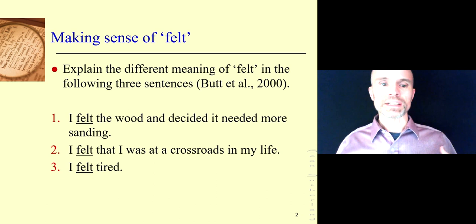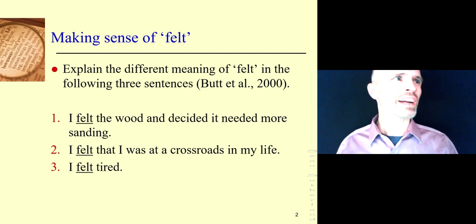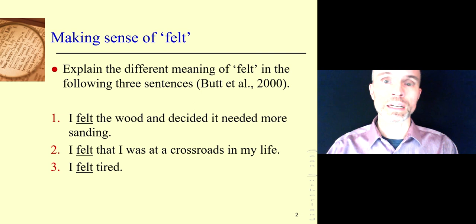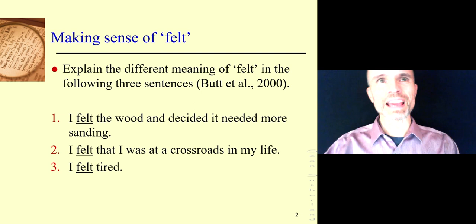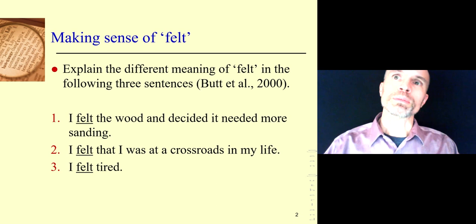Number one is actively doing something. Number two is a mental doing — doing something in your head, or an emotional doing. Number three, feeling tired, you're not really doing anything — you're describing an experience where nothing's actually happening. That's a good example of how, probably in school, your teacher said verbs are doing words, which is often true. But number three shows that's not always the case. So how can we talk about these in a precise way? That's what the tools available to us, as described in the experiential metafunction, do.